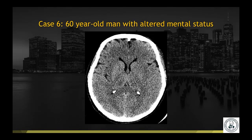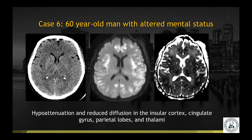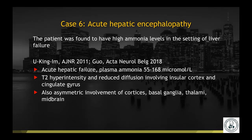Case number six is a 60-year-old man with altered mental status. Non-contrast head CT, diffusion, and ADC map demonstrate hypoattenuation and reduced diffusion involving the insular cortex bilaterally, cingulate gyri, parietal lobes, and thalami. This was a case of acute hepatic encephalopathy — the patient was found to have high ammonia levels in the setting of liver failure. This imaging distribution has been described in the literature, although you can also have asymmetric involvement of other areas of the cortex, the basal ganglia, thalami, and midbrain.